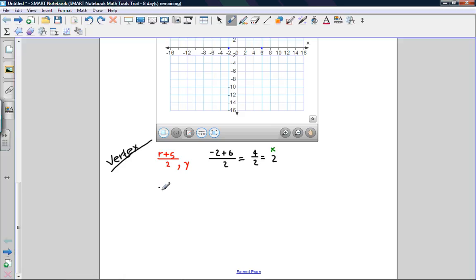So instead of x, we replace it with 2, which we have found as the x-coordinate of the vertex. That's 2 minus 6, times 2 plus 2.